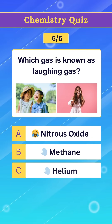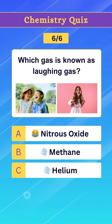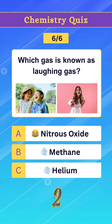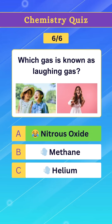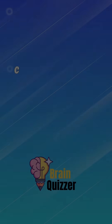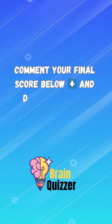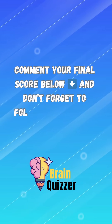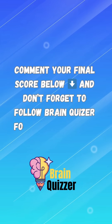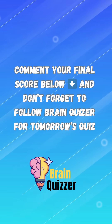Question 6. Which gas is known as laughing gas? Option A. Nitrous oxide. Comment your final score below and don't forget to follow BrainQuizzer for tomorrow's quiz.